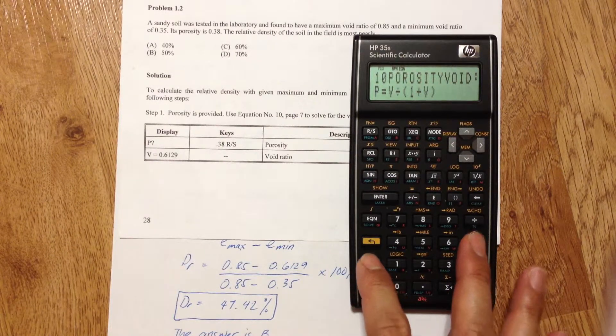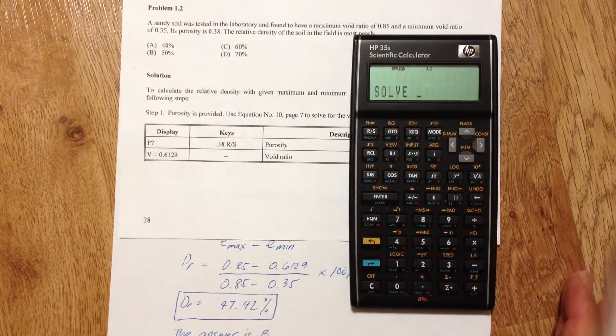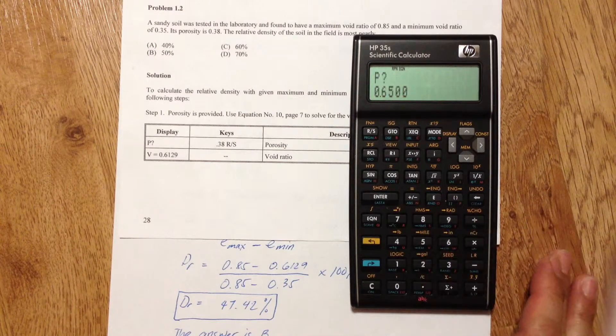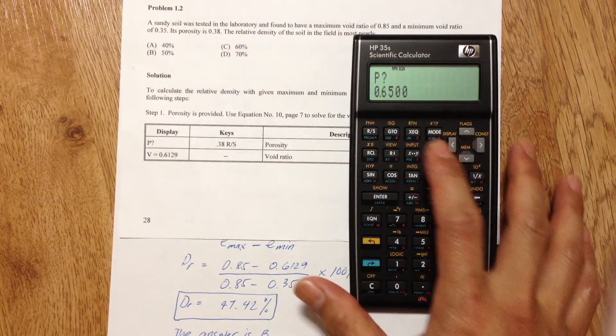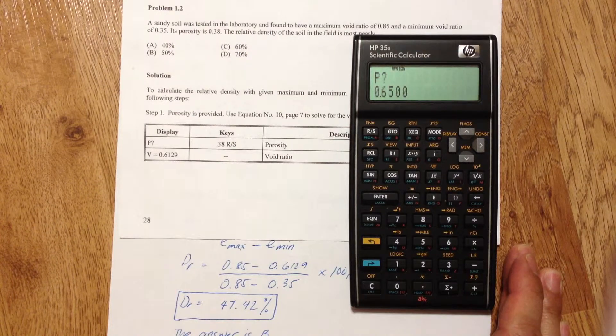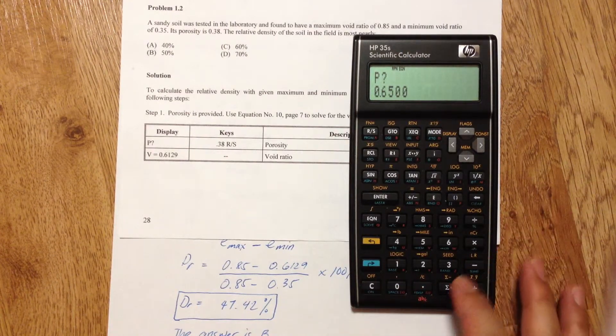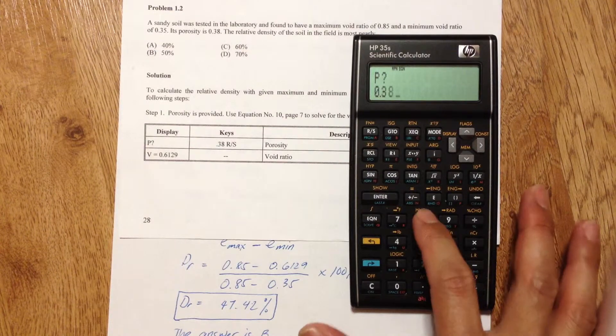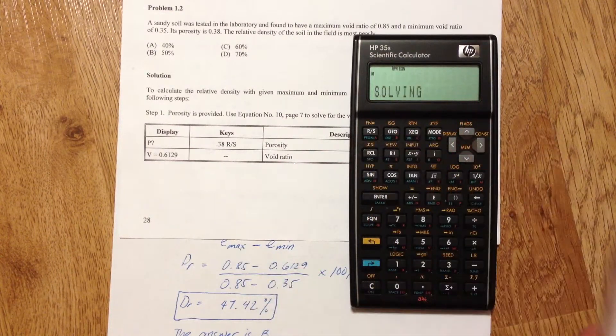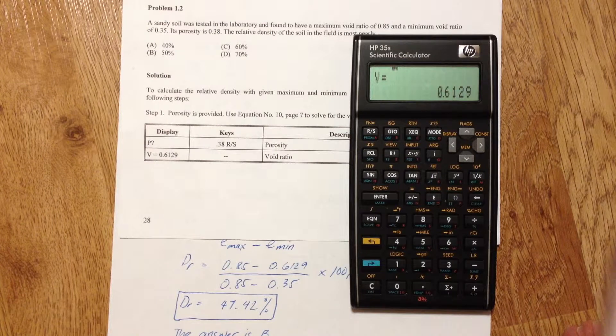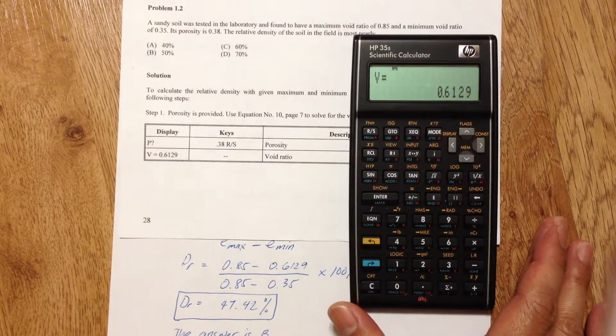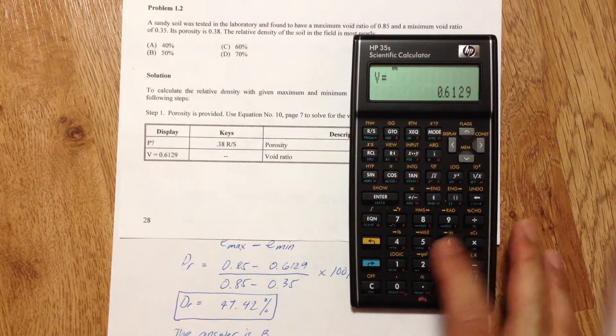So press the blue arrow then solve function then V for void ratio and it will ask you for P which is porosity and the given porosity is 0.38 and then RS and there's the void ratio of 0.6129.